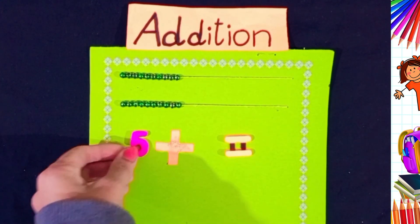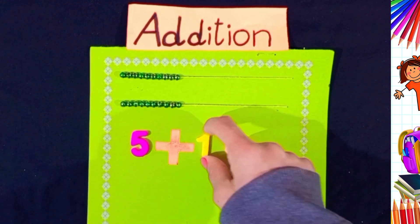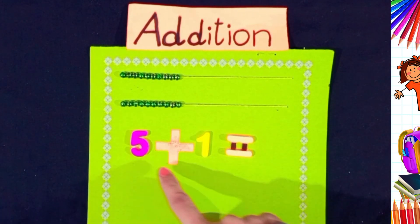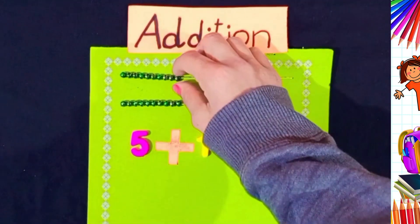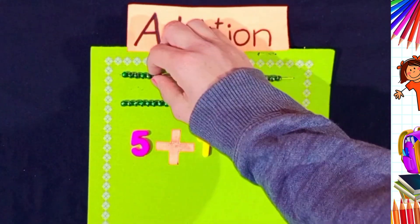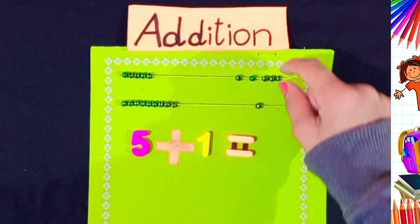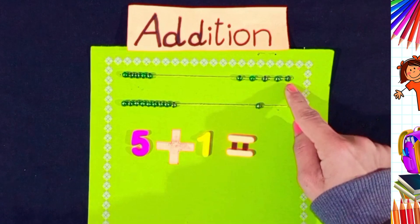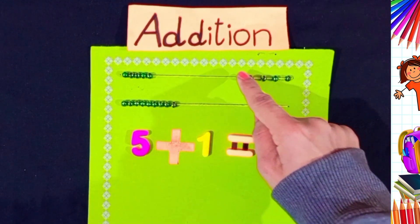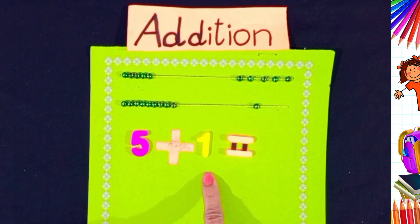Now, 5 plus 1. 5 plus 1. 5. 1, 2, 3, 4, 5. 1, 1. Let's count them. 1, 2, 3, 4, 5, 6. 5 plus 1 equals to 6.